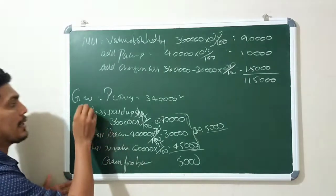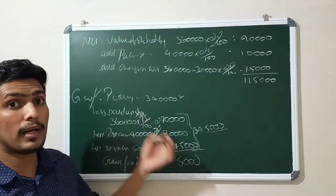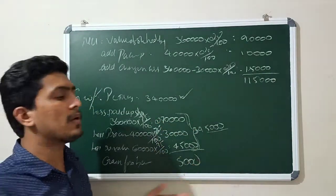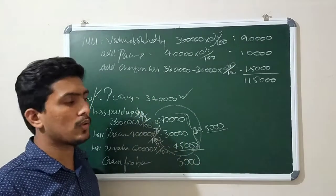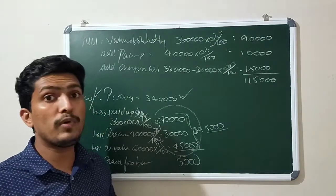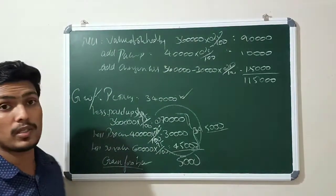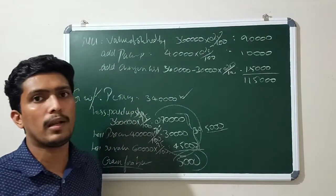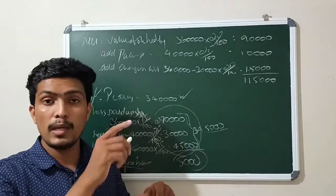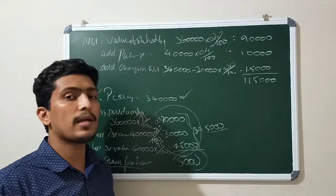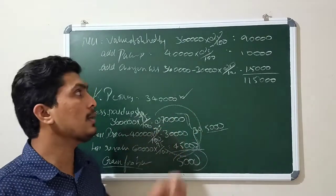This is a gain from bargain purchase. Goodwill calculation: this is a very rare item. If the purchase consideration is less than the fair value of net assets acquired, the difference is a gain from bargain purchase — not goodwill. Goodwill goes on the asset side; gain from bargain purchase goes on the liabilities side under shareholders' equity as retained earnings, since it is unexpected income.